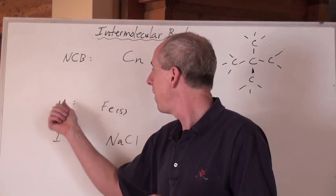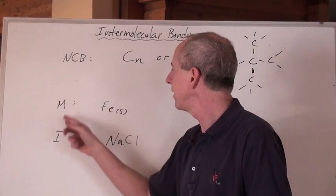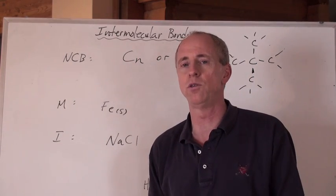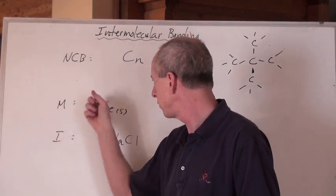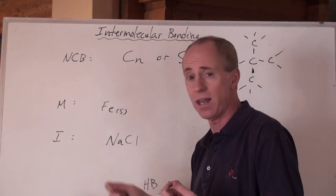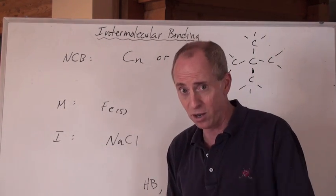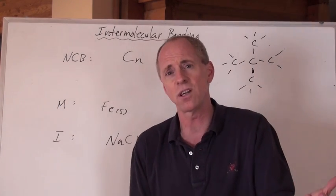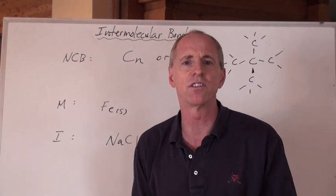Network covalent strongest, and then, well, you know what, metallic and ionic, don't rank those two in terms of one being stronger than another, they're pretty much the same. There are some metals that are stronger bonded and have higher melting points, say, than some ionic compounds, but some ionics are higher than some metals, so you really can't tell the difference, so don't even try.